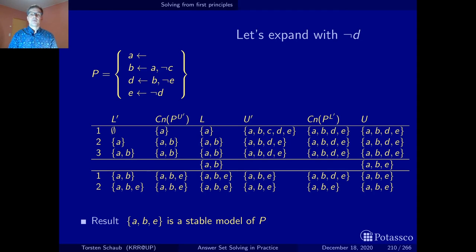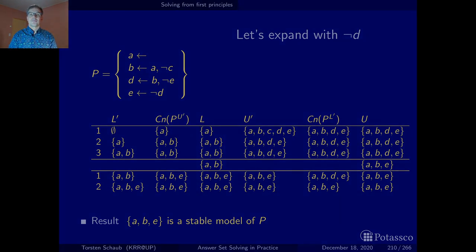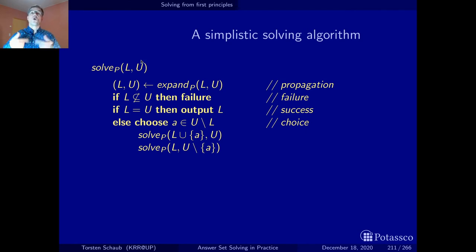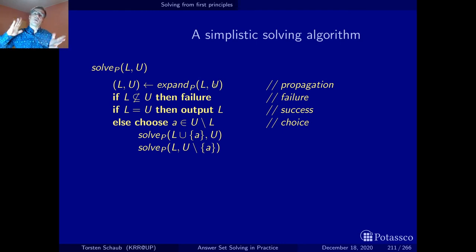Let's put all this together as our first algorithm for computing stable models of a logic program. The algorithm takes the program as a parameter along with a lower and upper bound — initially called with the empty set and all atoms. The first step is propagation: we take the program with the lower and upper bound and tighten the approximation as much as possible. When it's as tight as it gets, we do a case analysis with three cases: the bounds conflict (failure/backtrack), the bounds coincide (output stable model), or there is space between them (do a case analysis on an undecided atom).